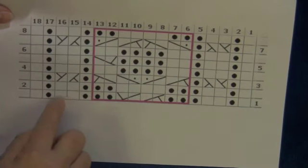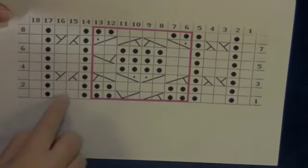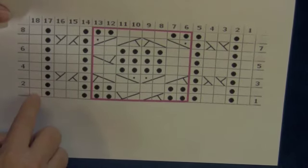And then we're going to finish out the row, remembering these little knit stitches are going to become twists later on. And then we finish off our right side row.